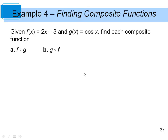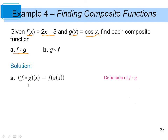Here are a couple of examples. We have f of x equals 2x minus 3, and a second function g of x equal to the cosine of x. We're going to find two composite functions: f of g of x and g of f of x. When we write f of g of x, we work from the inside out — we evaluate g of x first, then take those outputs and input them into the f function.